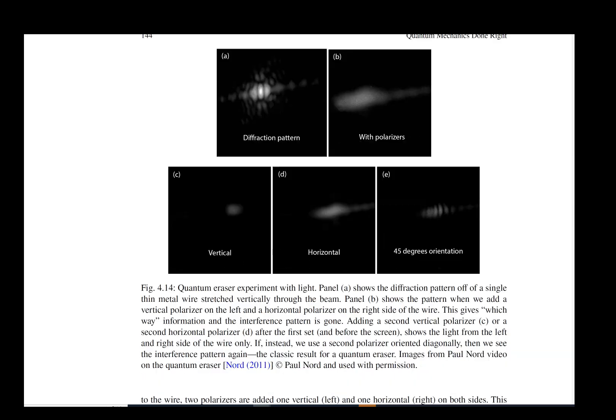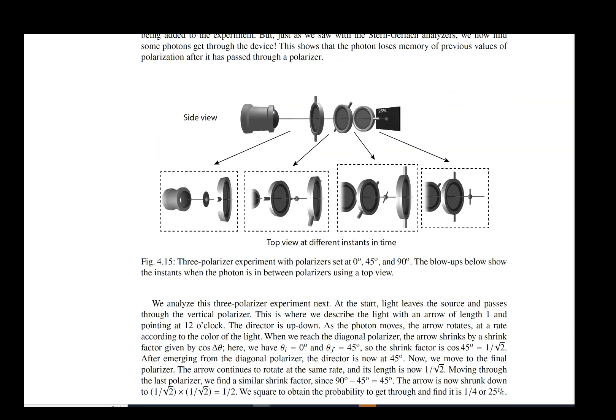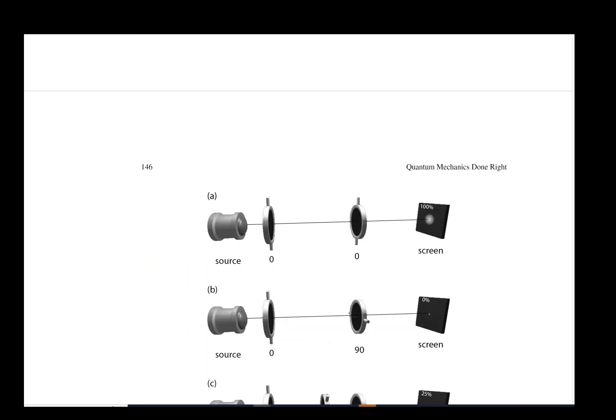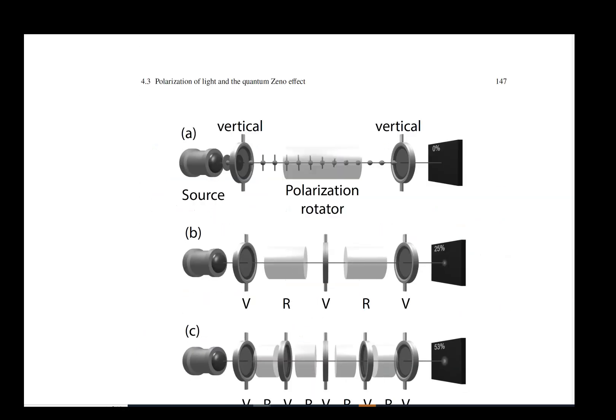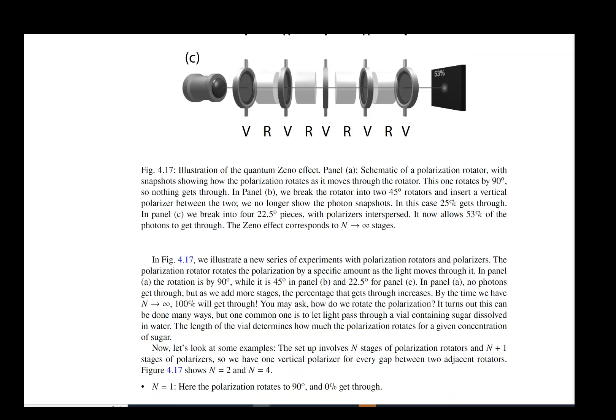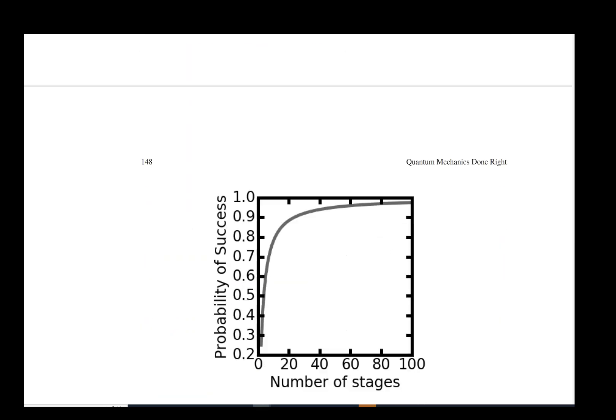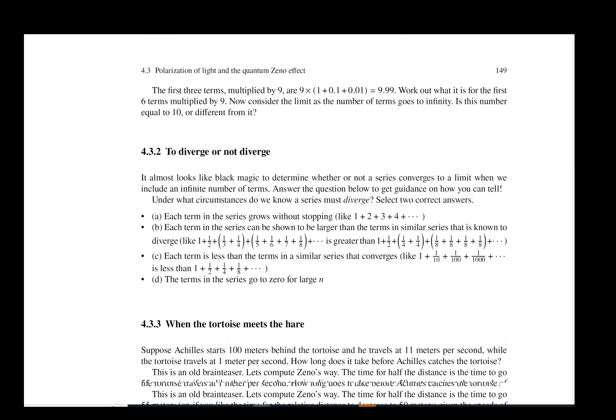We then move on to describe the sort of guts of how the quantum seeing in the dark experiment will work. It requires us to understand something called a polarization rotator and what happens with a rotator when you have polarizers and you intersperse them.